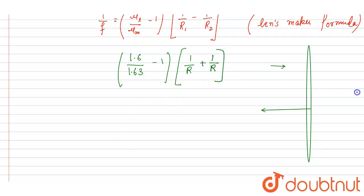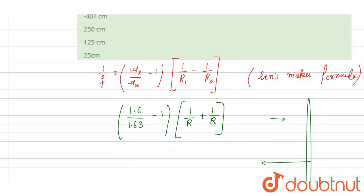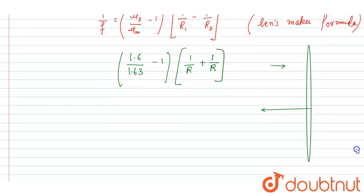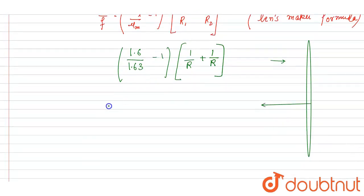So if you see, the R is also given in the question, it is 15 centimeter, right? So you can solve it. So if you see, if you put the value here, so it will be 1.6 minus 1.63. In division it will be 0.63. R is 15.